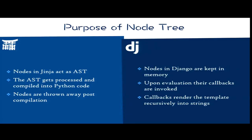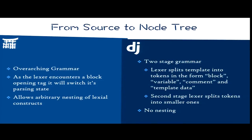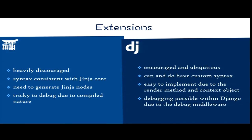In Django, nodes hang around with a render function and you can generate strings, and the callbacks render recursively into strings — which from a performance point of view is not particularly good. Extensions in Jinja are heavily discouraged; the interface was only added for domain-specific extensions, like translate tags you want to extract from your code. The syntax must be consistent with Jinja core — you need to follow the general grammar at least from a token point of view. In Django for a long time the SSI tag path wasn't actually quoted, which you can't do in Jinja because it would give you a syntax error.